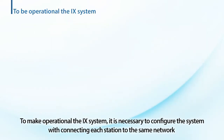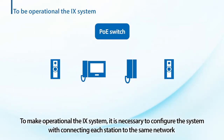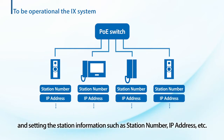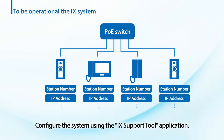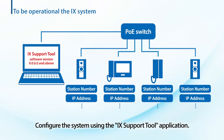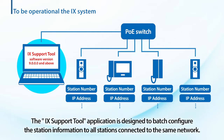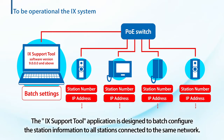To make operational the IX system, it is necessary to configure the system by connecting each station to the same network and setting the station information such as station number, IP address, etc. Configure the system using the IX support tool application. The IX support tool application is designed to batch configure the station information to all stations connected to the same network.